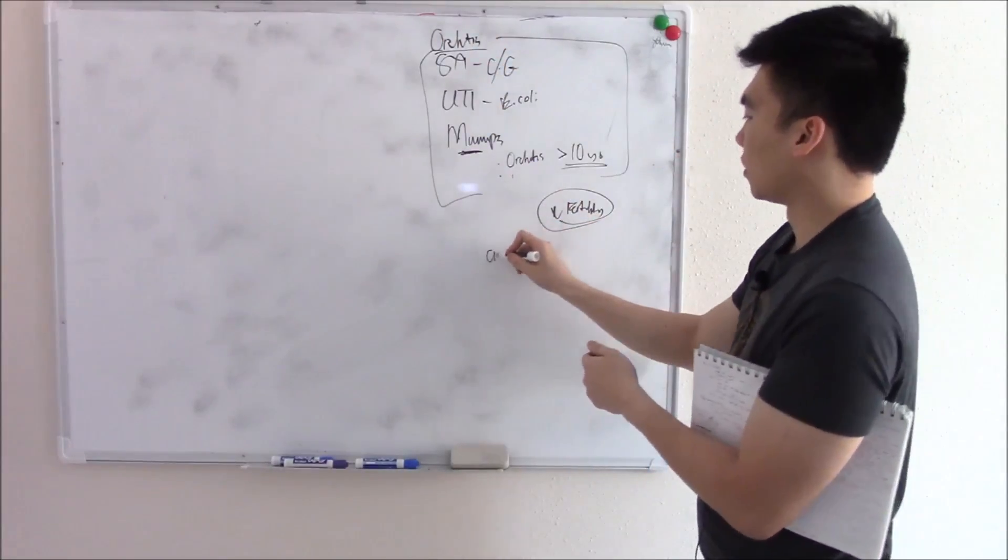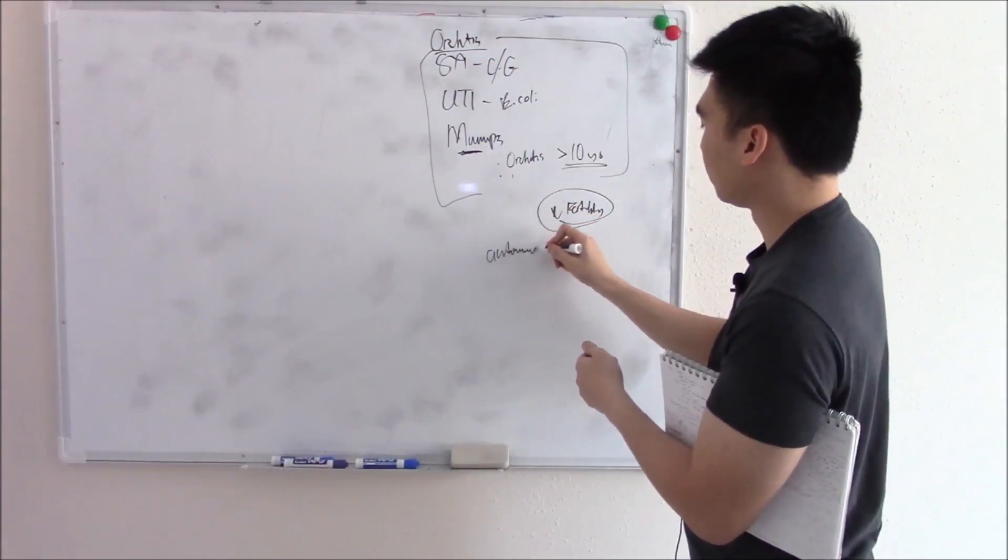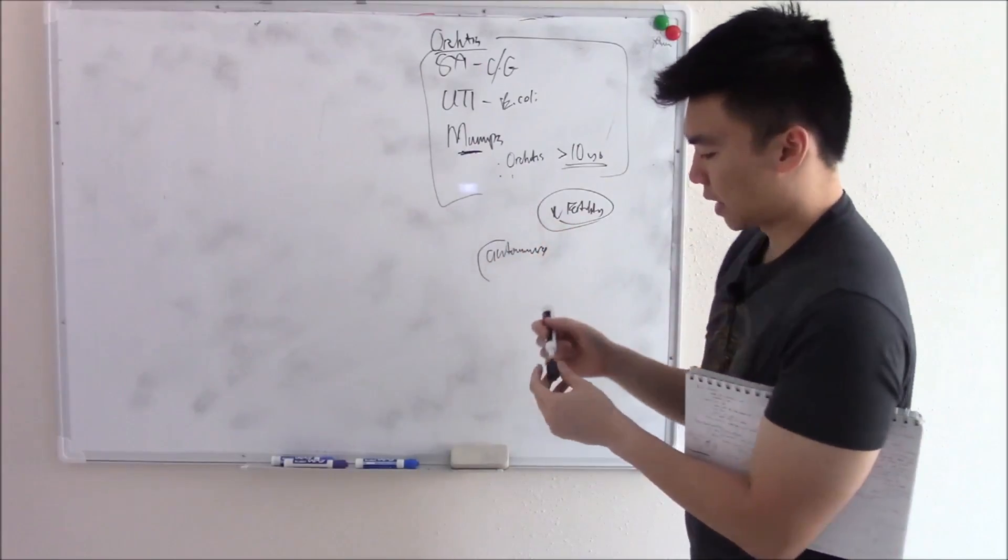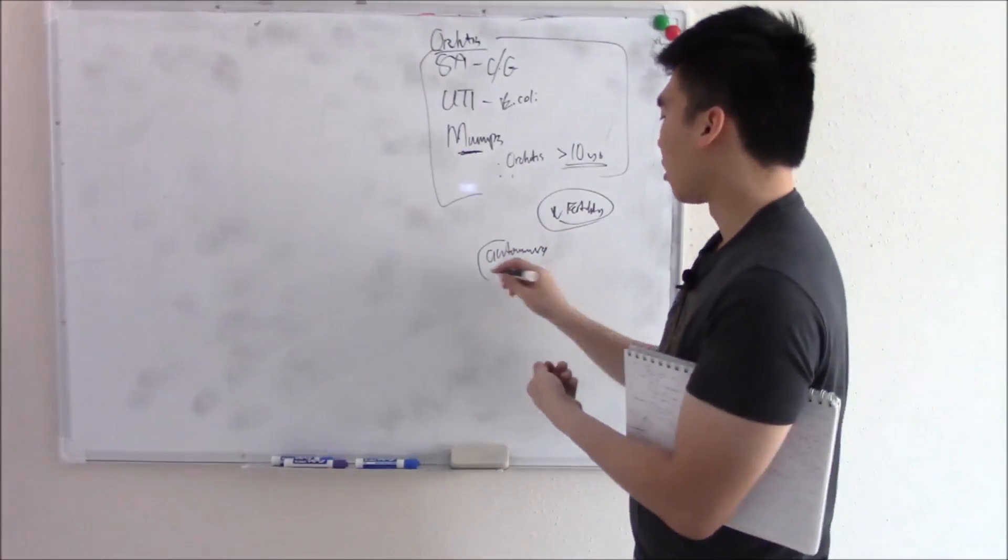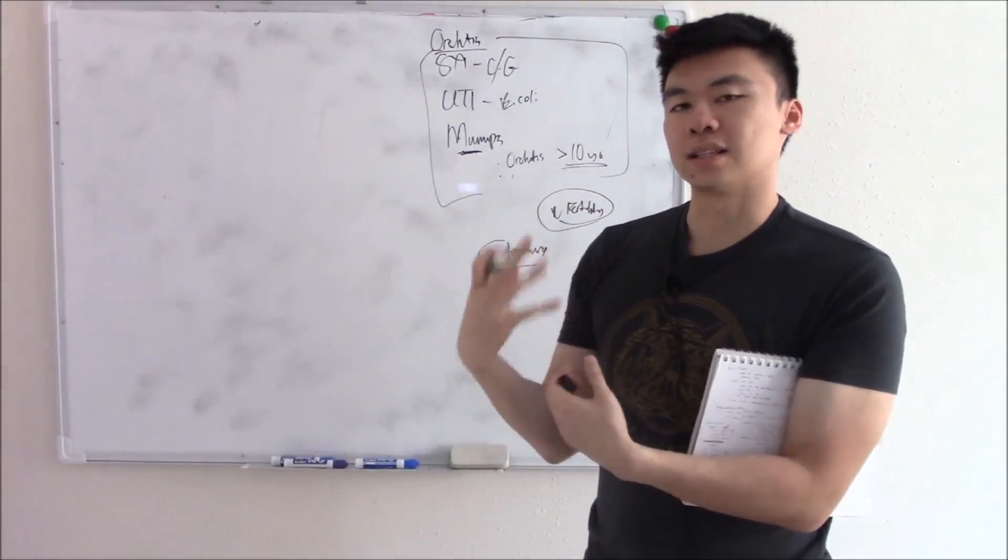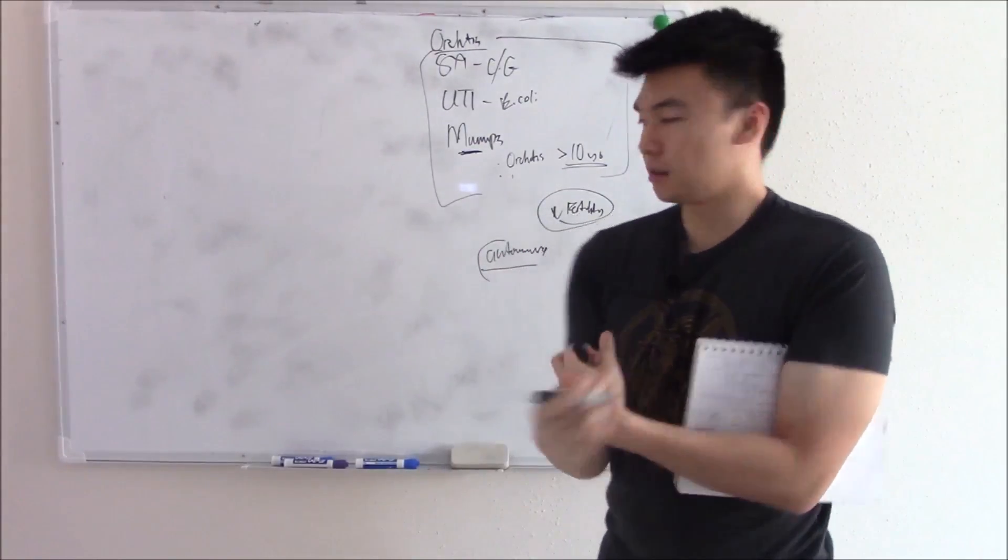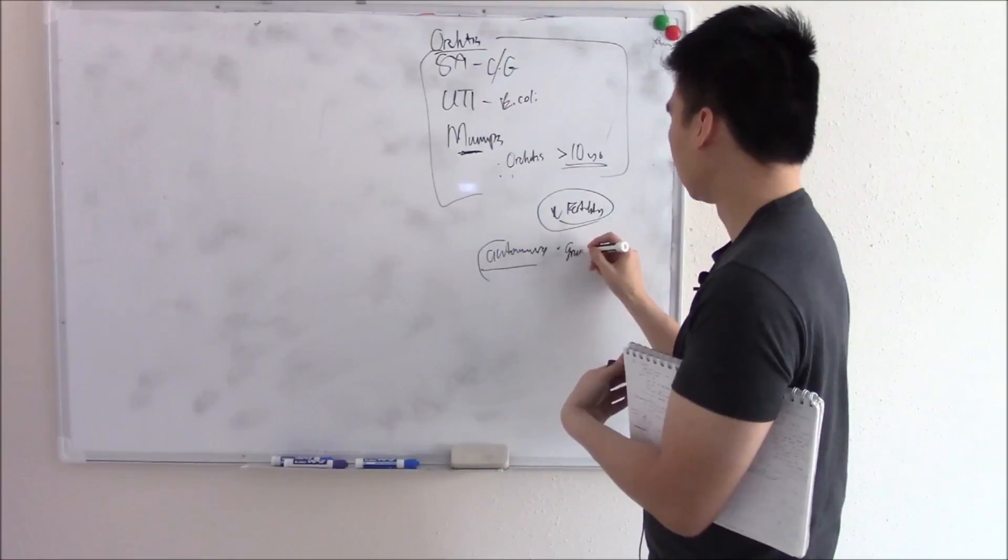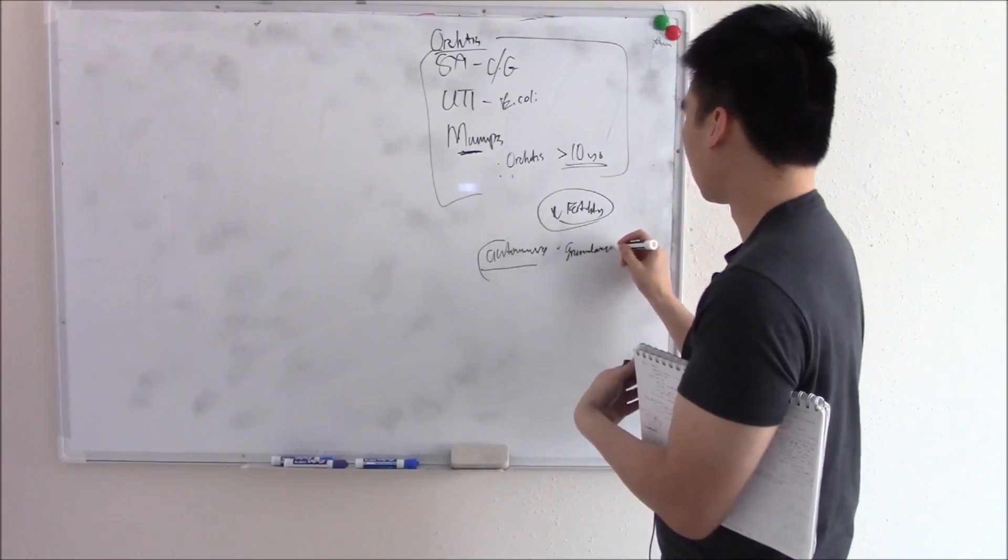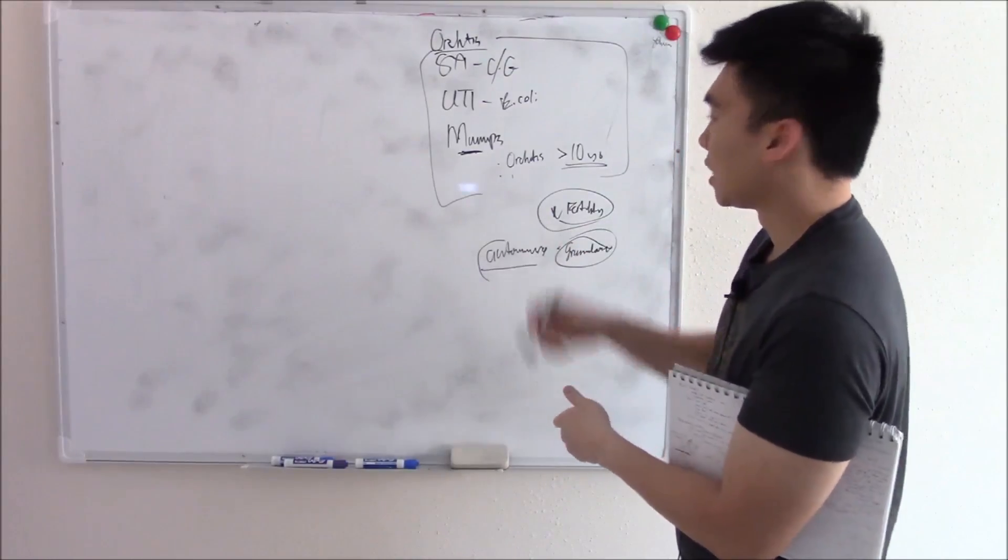One more is autoimmune inflammation. We talked a little bit about that when we talked about the blood testes barrier. Autoimmune inflammation is a little more chronic and anytime you have chronic inflammation, what can you see? If you say granulomas, you are correct. That is orchitis.